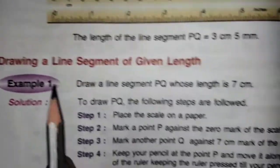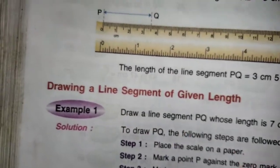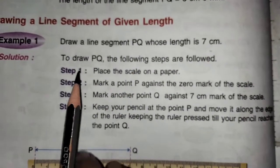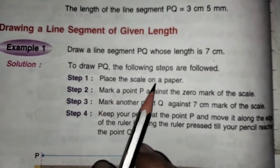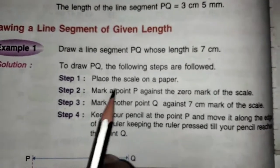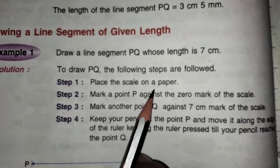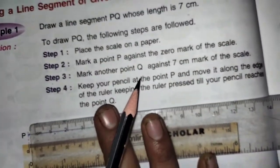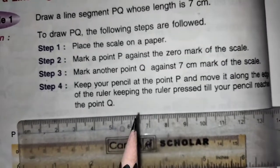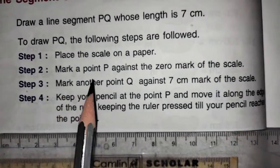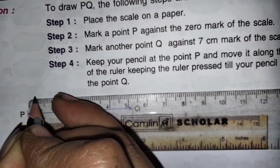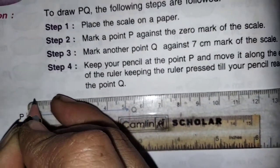Now next one, they told to draw a line segment of a given length. Here they gave 7 cm. First what they told, to draw PQ, the following steps are followed. Place the scale on a paper, you have to place the scale on a paper like this way children. Then what they told, mark a point P against the 0. Here 0 is there, against the 0, here it is a P point.